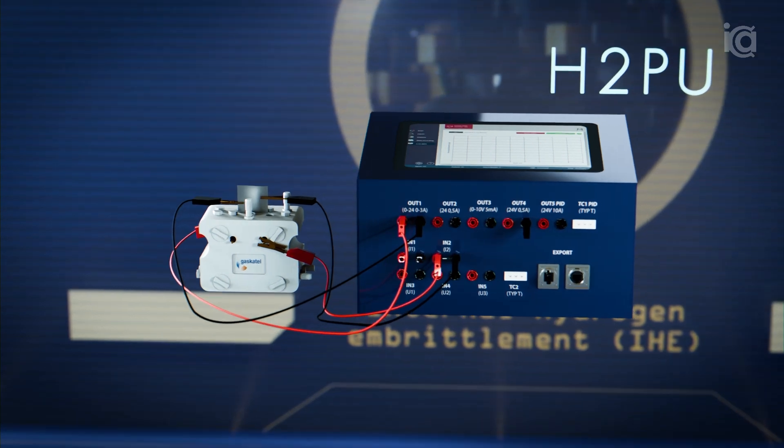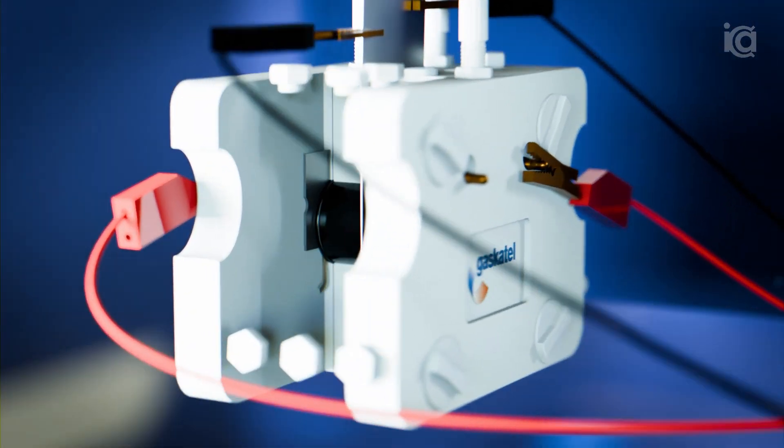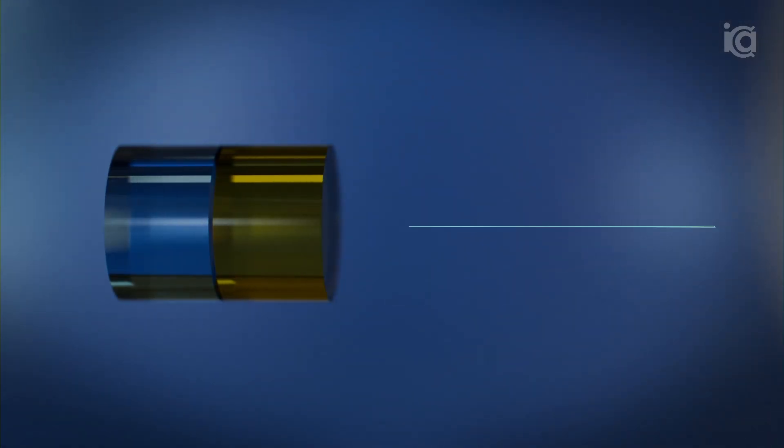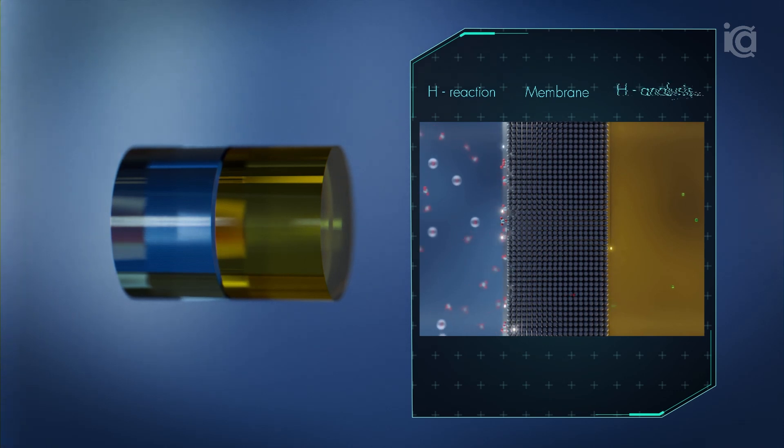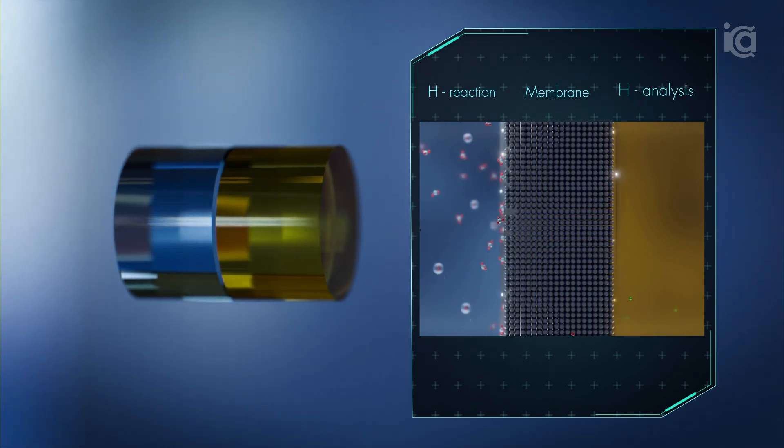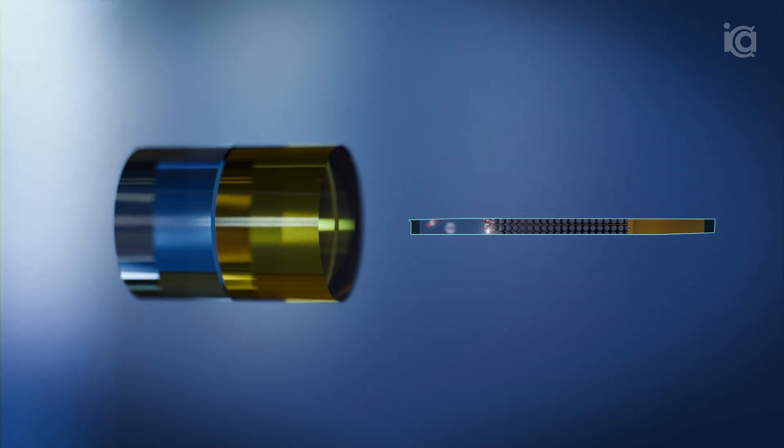Electrochemical permeation measurement can be carried out using the H2PU measuring station, which employs a double-cell setup to record the hydrogen produced on the reaction side. This system measures hydrogen permeation through a workpiece or membrane and assesses the barrier effect of protective layer systems reproducibly.